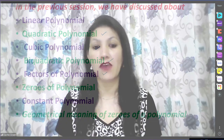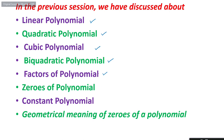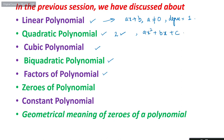Yes, absolutely. In part 1 we discussed zeros of a polynomial. A linear polynomial is in the form ax plus b, where a is not equal to zero, and its degree is one. A quadratic polynomial has degree two and is written as ax² plus bx plus c, where a is not equal to zero. A cubic polynomial has its highest degree as three, a biquadratic has degree four.